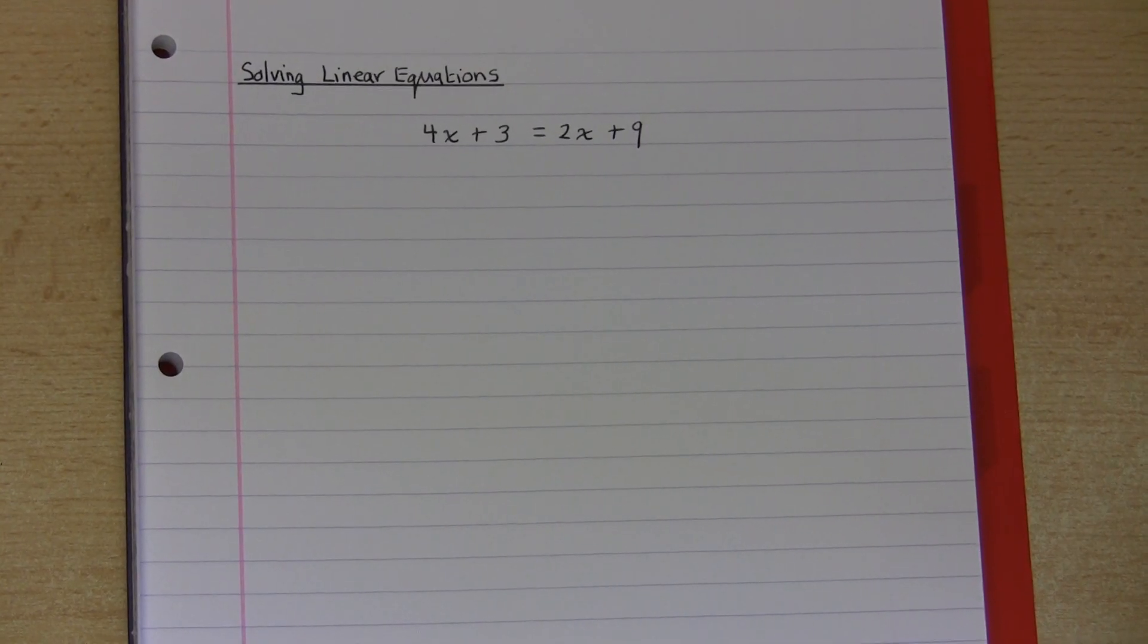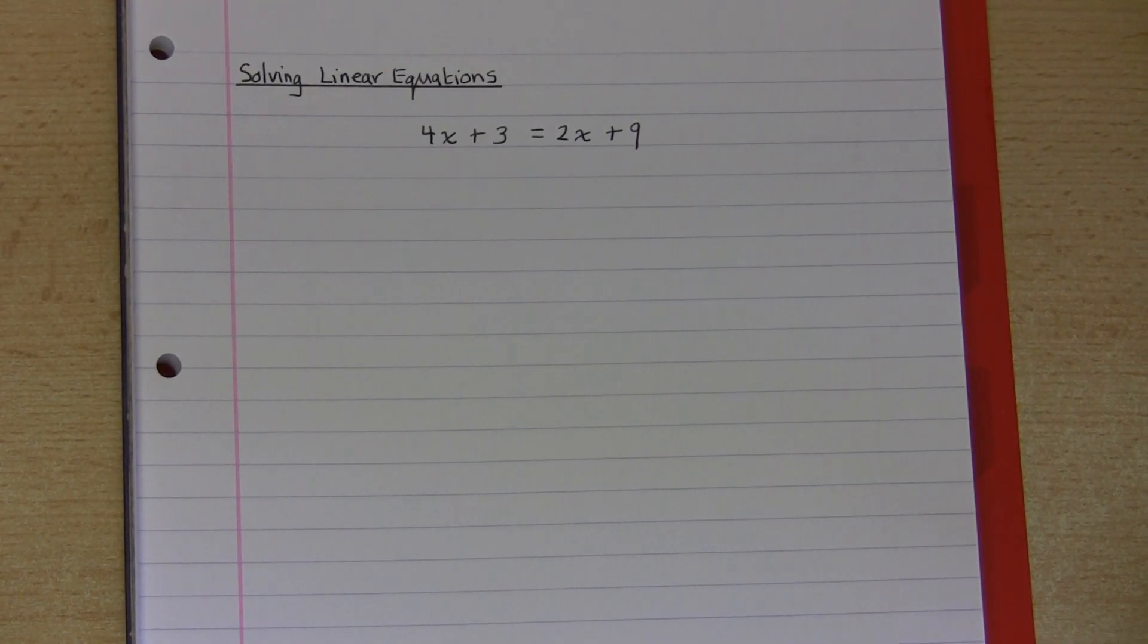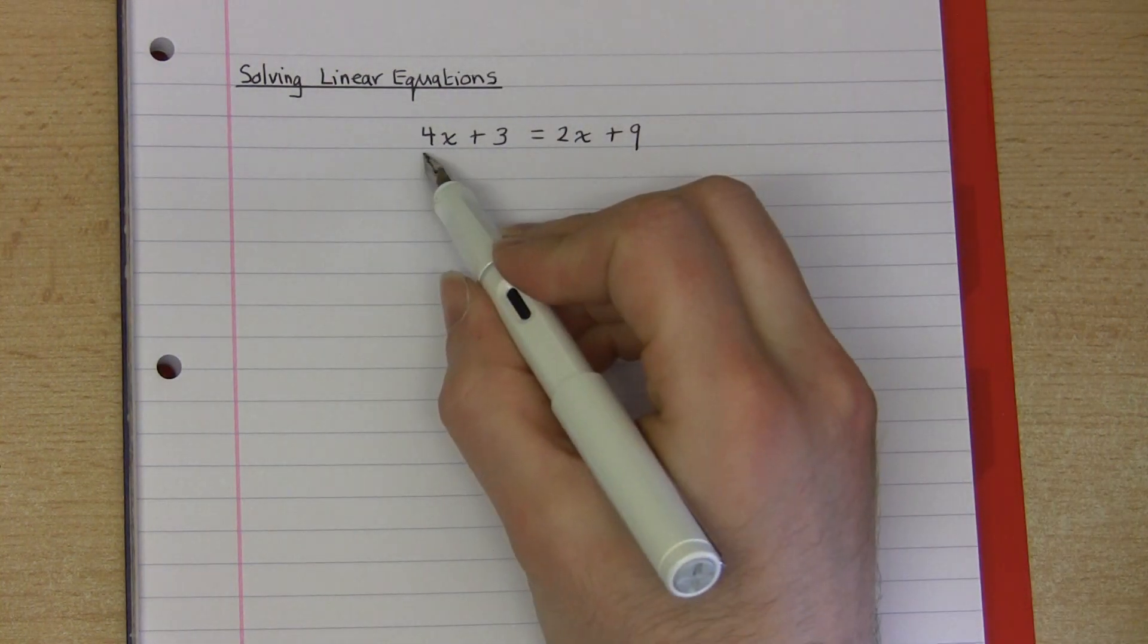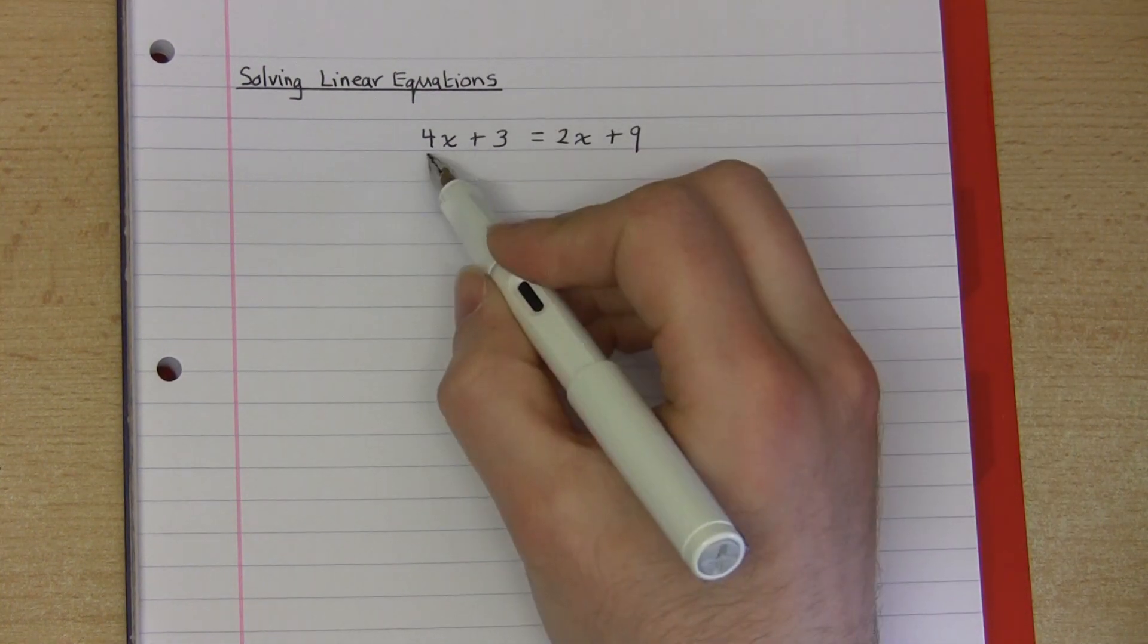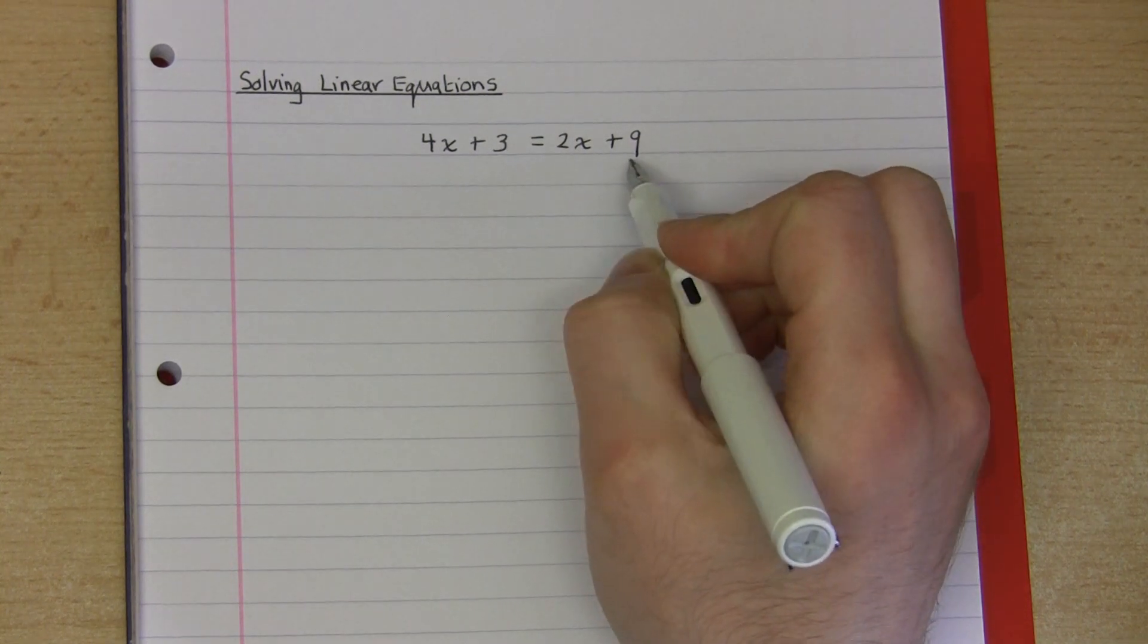Let us consider how to plan a lesson in which the goal is for learners to be able to solve linear equations of this type. So for example, 4x plus 3 is equal to 2x plus 9.